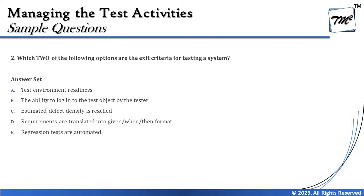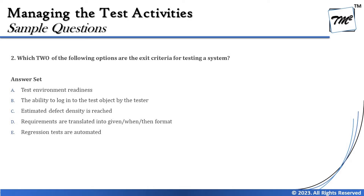Option A says test environment readiness. That is certainly entry criteria, because readiness of the environment allows you to perform executions — so it is not exit criteria. Option B, the ability to log in to a test object by the tester, is more of a prerequisite. Until you log in to a system, you cannot kick-start your use cases or executions — so it's entry criteria for getting started.